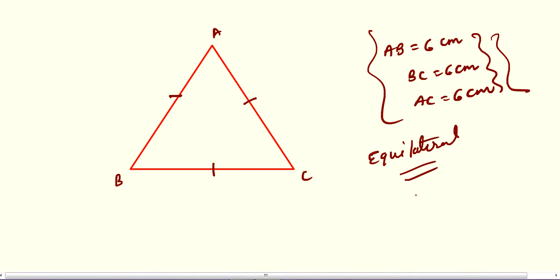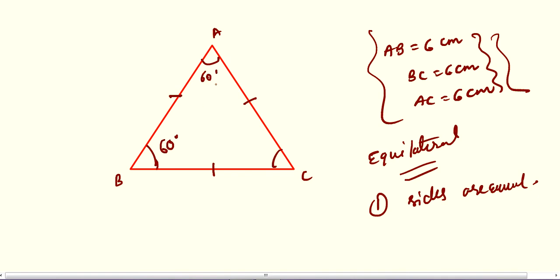In an equilateral triangle, all sides are equal, which means all angles are also equal. Each angle is 60 degrees. 60 plus 60 plus 60 equals 180, which satisfies the angle sum property.